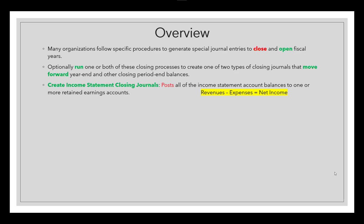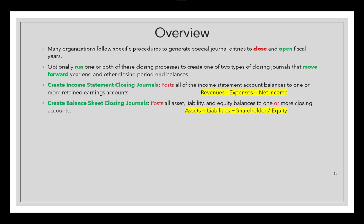There is one field for REA — it's required during implementing the budget. Otherwise, optionally, you can run this process. The second process is for balance sheet closing journals, which posts all assets, liabilities, and equity balances to one or more closing accounts. The equation is: assets equal liabilities plus stockholders' equity. This is also optional — you can create it from scheduled processes, one for income statement and one for balance sheet.